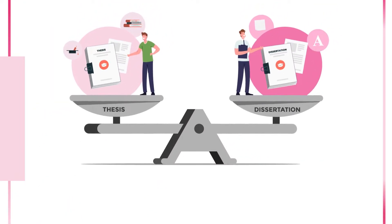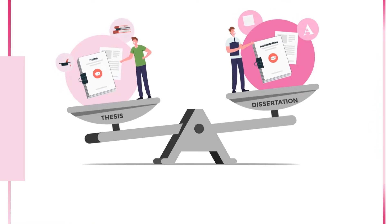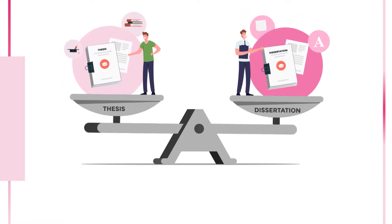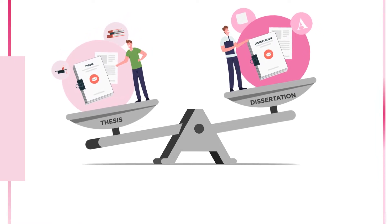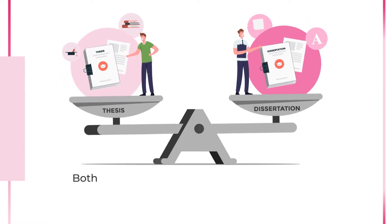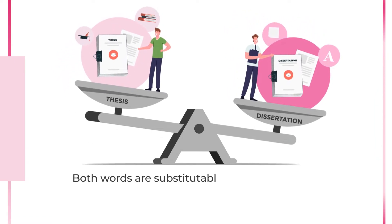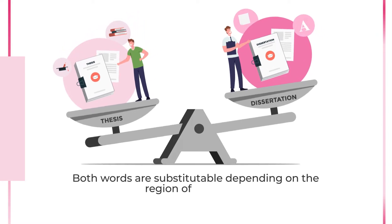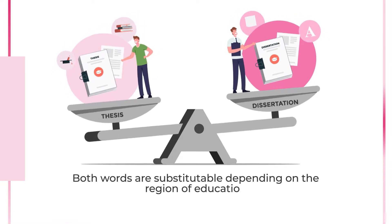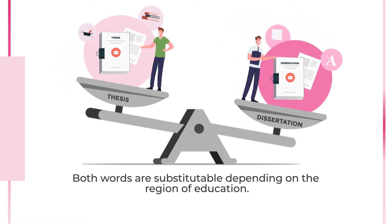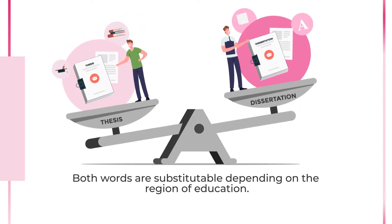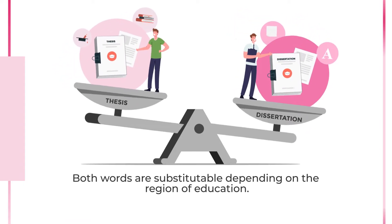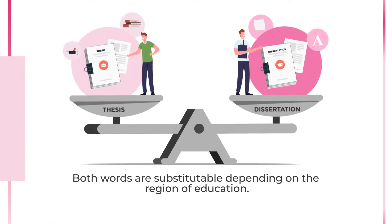The difference between thesis and dissertation begins with the kind of degree being pursued. As per the British education system, a dissertation is done at the undergraduate or masters level whereas a thesis is written at the end of a doctoral degree. However, many institutions in other parts of the world follow it in the reverse and use the words interchangeably. In the state of confusion, go with what your university uses.